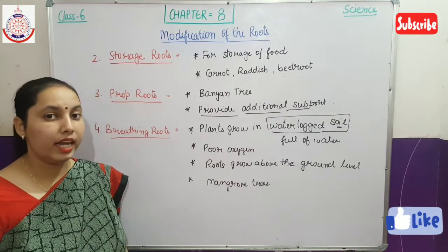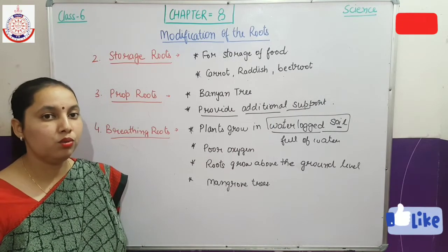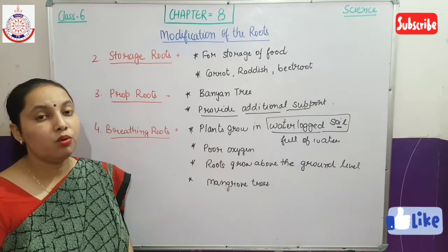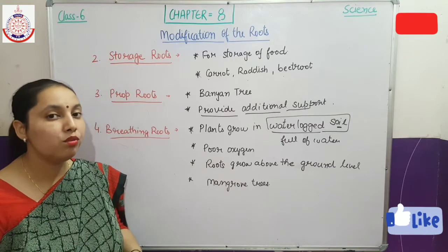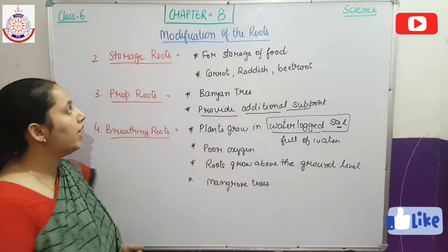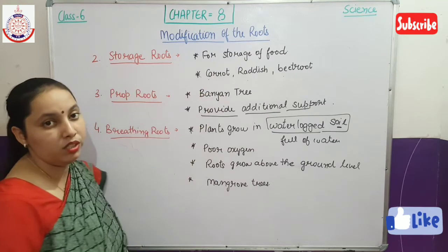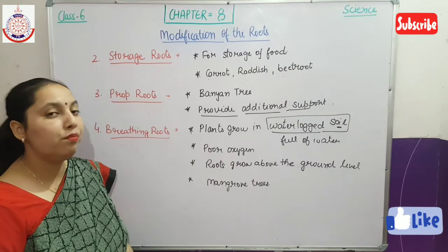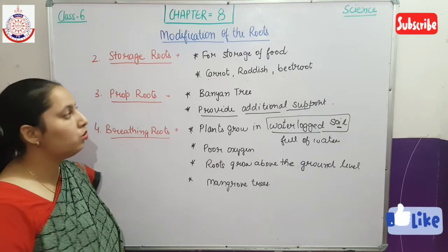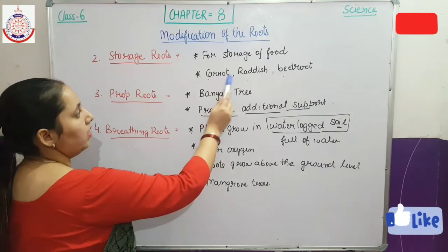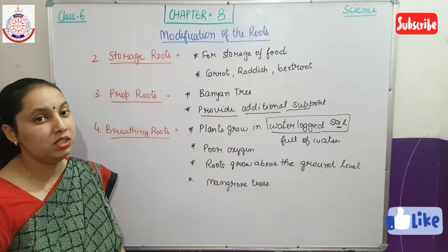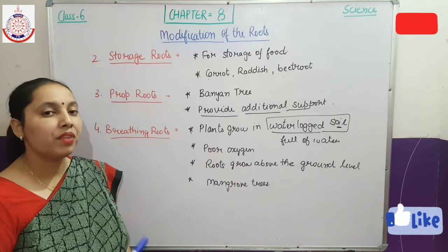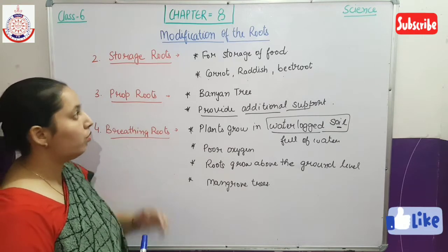The second category of modified root is the storage root. It is clear from the name that the plant stores its food in the form of roots. In storage roots, food is stored inside the roots. Plants like carrot, radish, and beetroot have a special kind of root that stores food, and that type of root is known as a storage root.